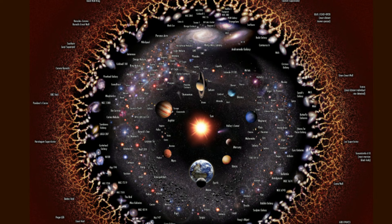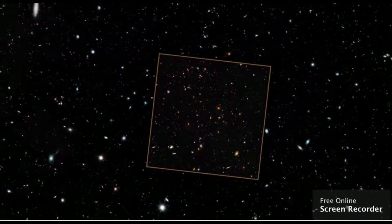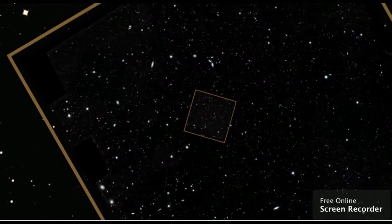The dots that look like stars are galaxies, and galaxies contain billions of stars. And then our solar system is located around just one star.